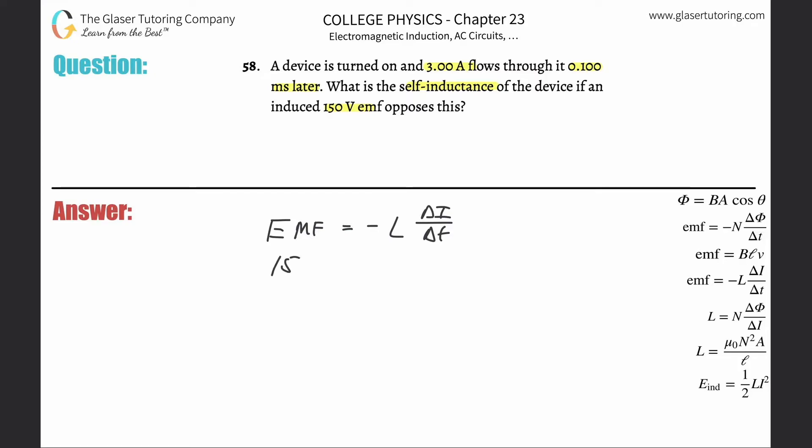So here's a 150 EMF. If you wanted to use the negative sign here, then you'd plug in the negative sign here because it says it opposes this. So the negatives will cancel in the end, so it doesn't really matter. We're solving for the self-inductance L, so that's our unknown.